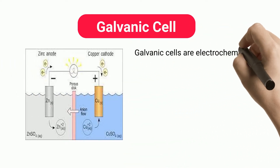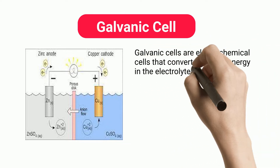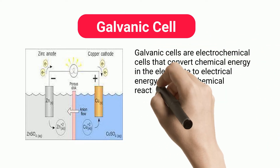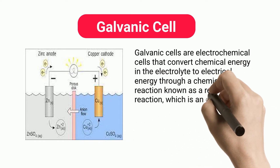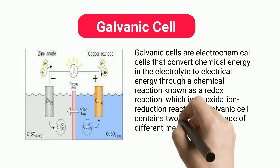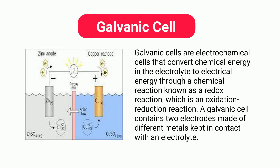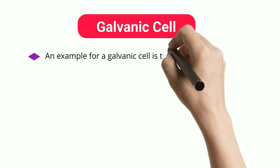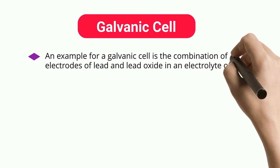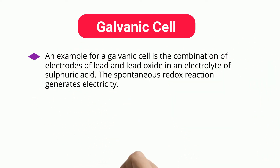Galvanic cells are electrochemical cells that convert chemical energy in the electrolyte to electrical energy through a chemical reaction known as a redox reaction, which is an oxidation-reduction reaction. A galvanic cell contains two electrodes made of different metals kept in contact with an electrolyte. An example of a galvanic cell is the combination of electrodes of lead and lead oxide in an electrolyte of sulfuric acid. The spontaneous redox reaction generates electricity.